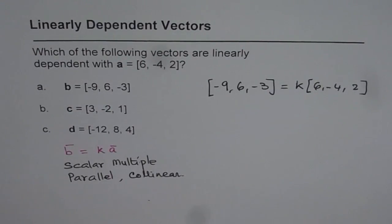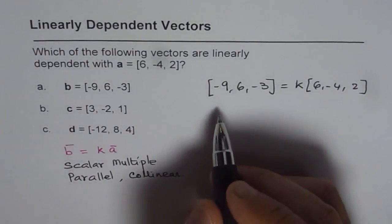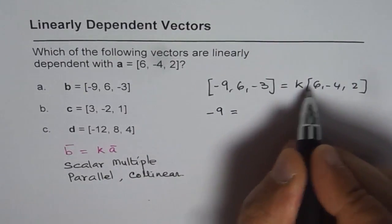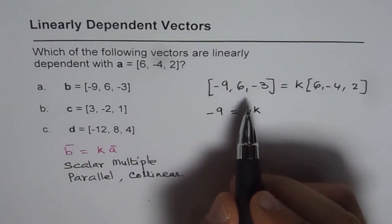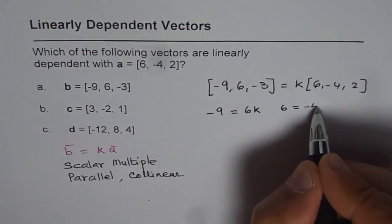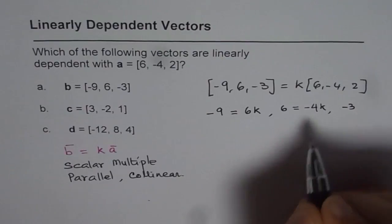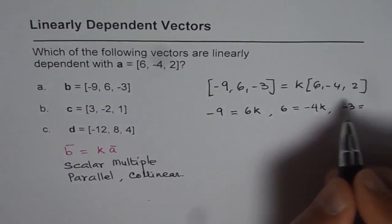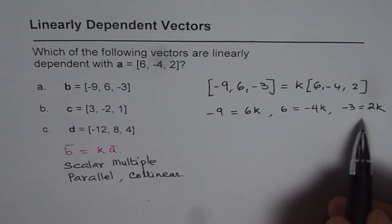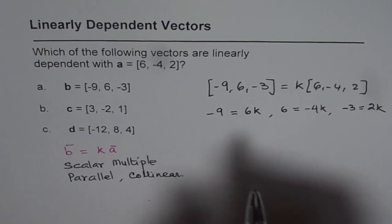So let us figure out what value of K can satisfy this relation. Let us start with -9. So we will have three different equations: -9 equals 6K, then we also have equation 6 equals -4K, and then we have equation -3 equals 2 times K. These are three different equations. Now, in each of these, if I get the same value of K, that means it is a scalar multiple, right? So let us calculate.